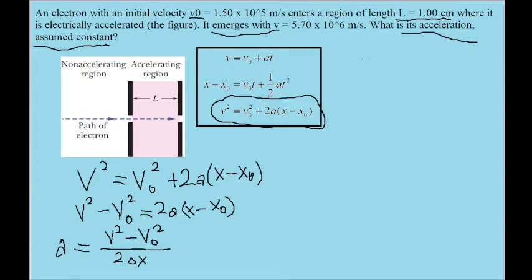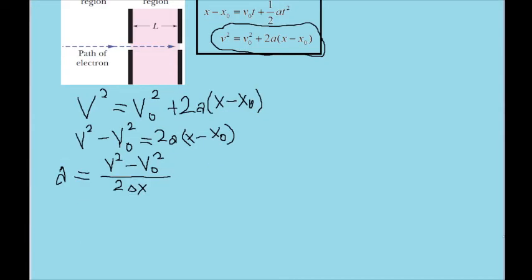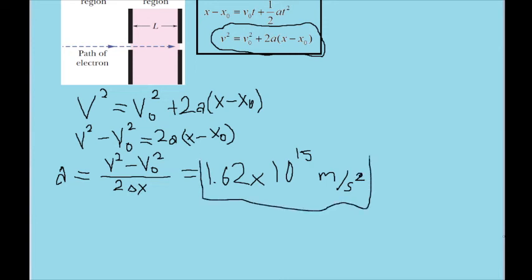Though in order to keep our units consistent, we'll want to convert that into meters. So you could just write that as 1 times 10 to the power of negative 2 meters. If you plug all those values into this formula, then you'll find an acceleration of about 1.62 times 10 to the 15 meters per second squared. And that is the acceleration of the electron in this problem.